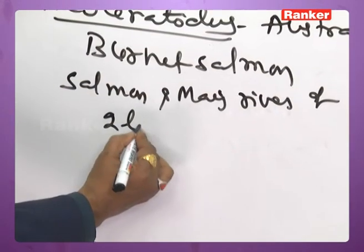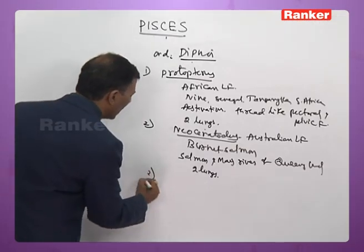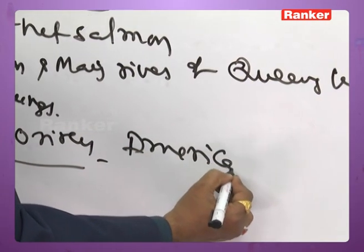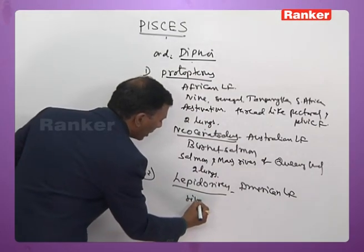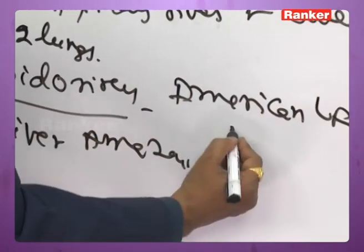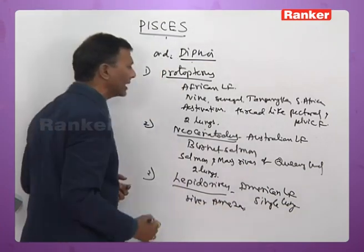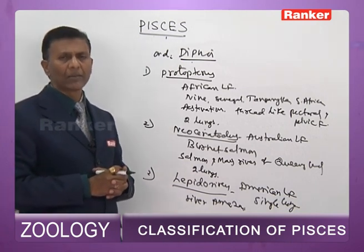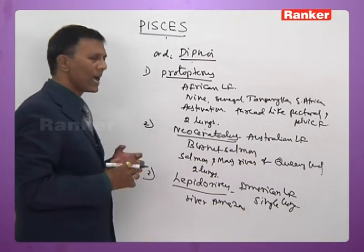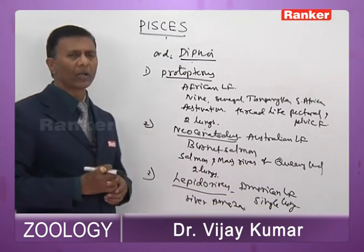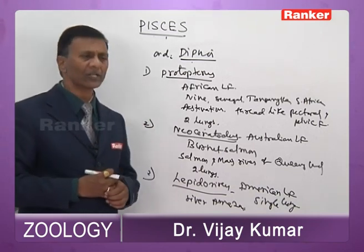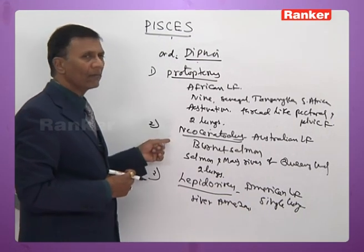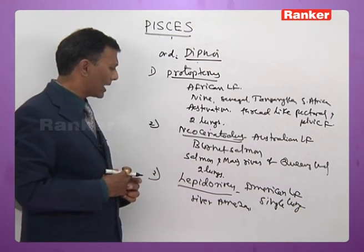Lepidosiren, commonly called American lungfish, lives in the Amazon river and has only a single lung. The entire order Dipnoi is represented by only three genera: Protopterus — African lungfish with two lungs; Neoceratodus — Australian lungfish or Barramundi salmon with two lungs; Lepidosiren — American lungfish living in the Amazon river of South America with one lung.